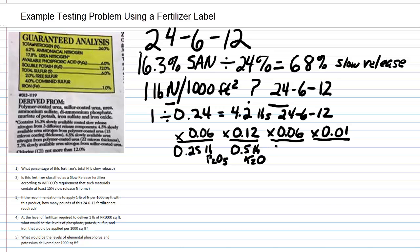4.2 times 0.06 for sulfur is again 0.25 pounds. The last one, 4.2 times 0.01, is 0.042 pounds of iron — so approximately 0.04 pounds. Those are the levels of the other nutrients being delivered to provide one pound of nitrogen.